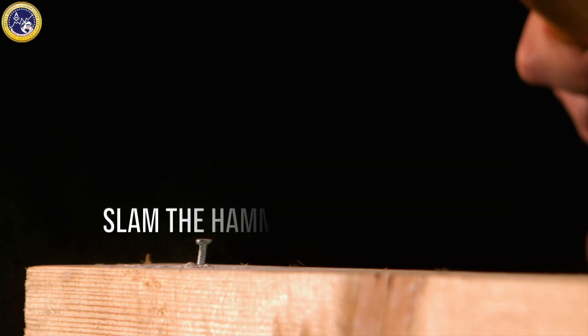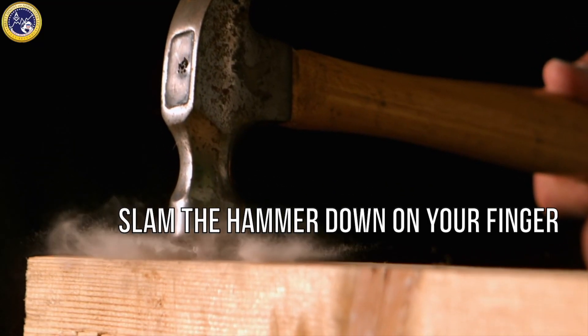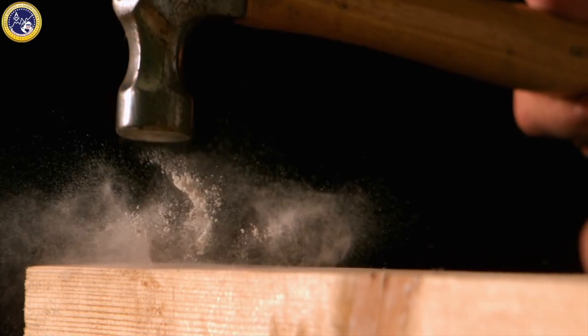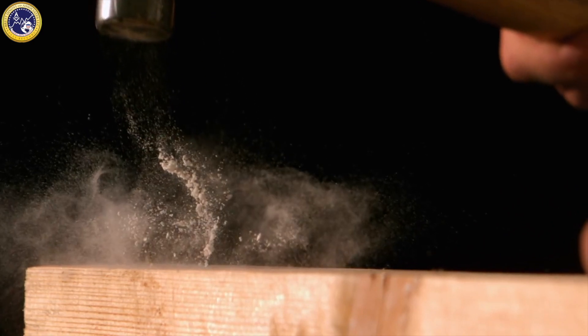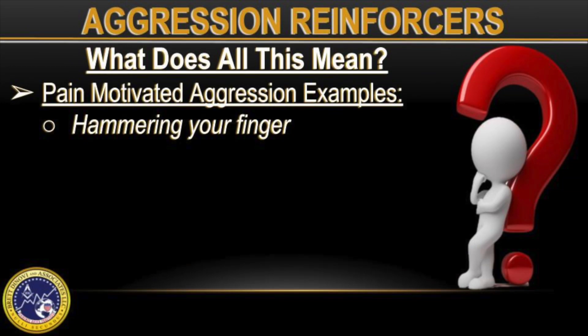Have you ever hung up a picture or put together furniture and slammed the hammer down on your finger? When that happened, did you yell loudly the first expletive you could think of? This is an example of pain-motivated aggression. In this situation, the aversive stimulus is hitting your finger with a hammer, which acts as a motivating operation, increasing the value of yelling as a reinforcer in that instance.